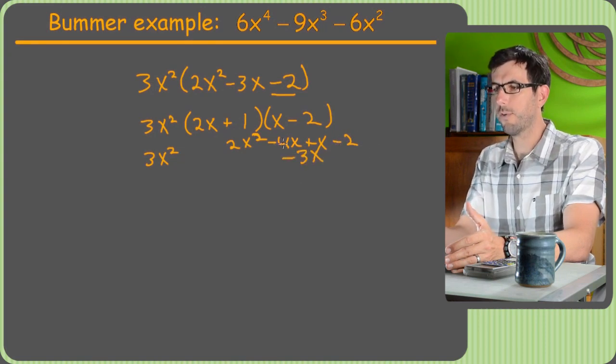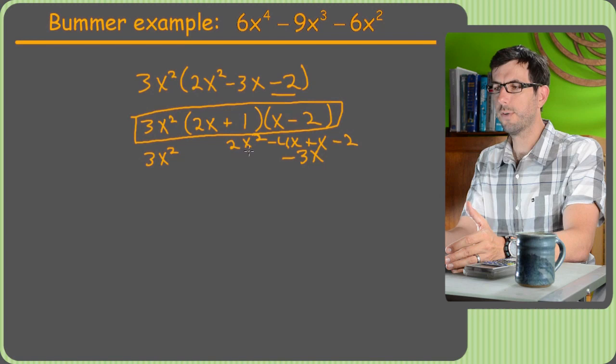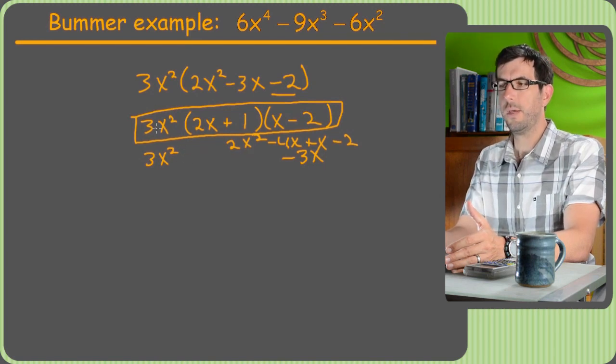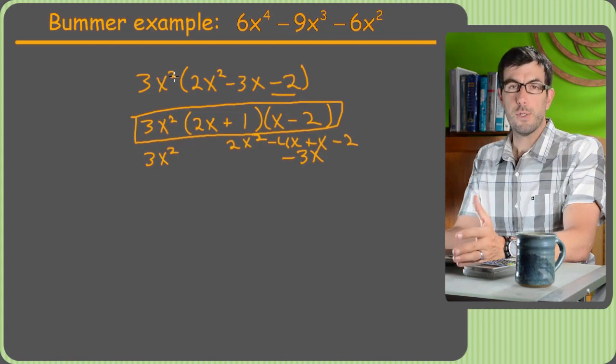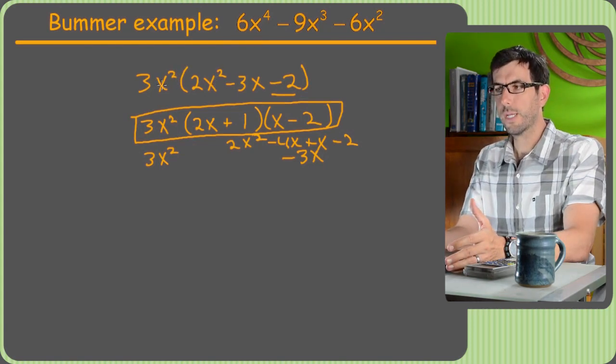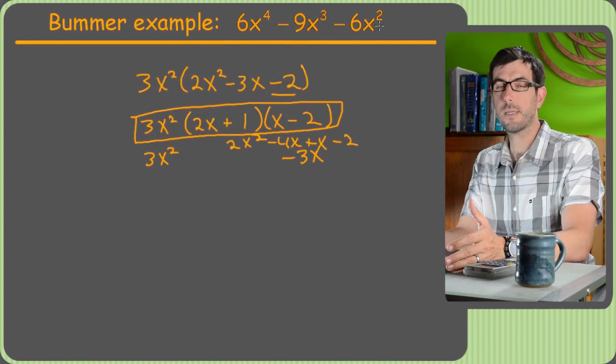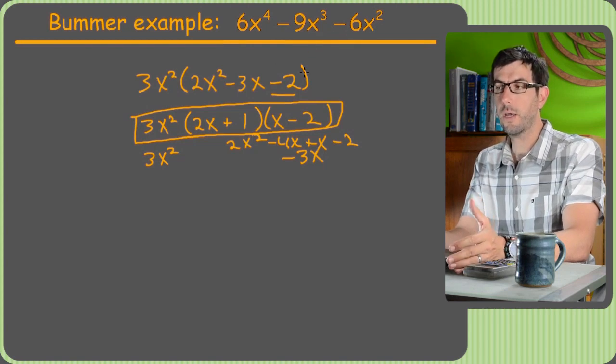And just since we're nervous, we could try factoring in, multiply the 3x squared times all this, too. So check that my original factoring out was correct. 3x squared times 2x squared is 6x to the fourth. 3x squared times negative 3x is negative 9x cubed. And negative 2 times 3x squared is negative 6x squared. So there you go. We got the correct factoring. All good.